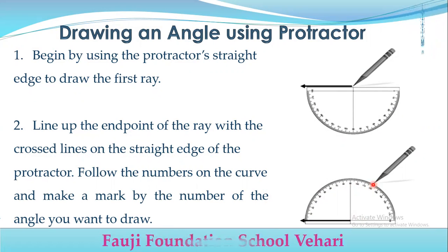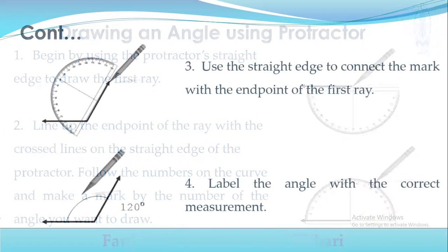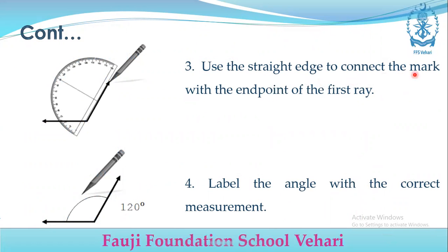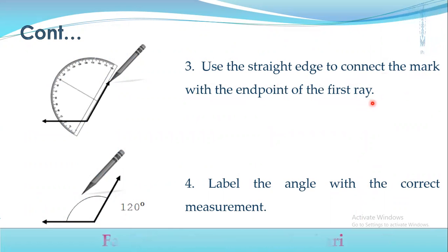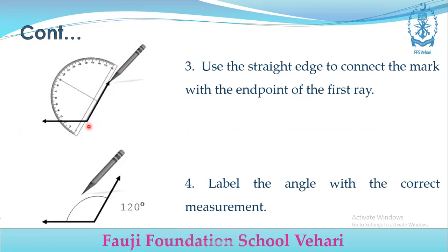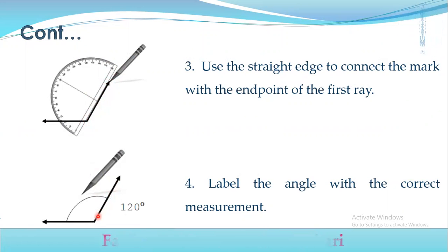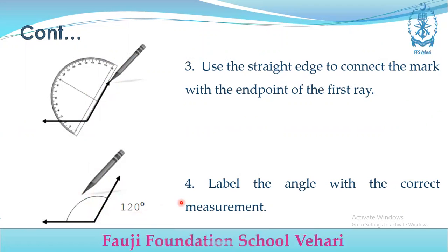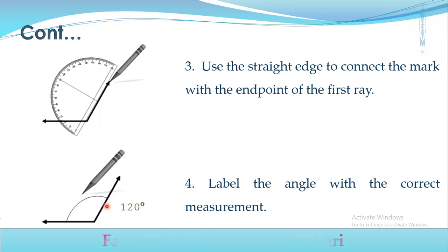You put a dot at the center point and remove the protractor. Then use the straight edge to connect the mark with the end point of the first ray, drawing the line through the dot. You put a curve and label it 120 degrees. Label the angle with the correct measurement. This is how you draw an angle.